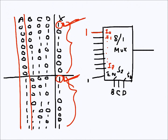Looking at I1, which corresponds to the combination 0-0-1 on the select, I see the output is zero in one row and one in the other — it is changing. I look at how it changes with respect to A: when A is zero, the output is zero; when A is one, the output is one. That means I have to apply A to input I1.